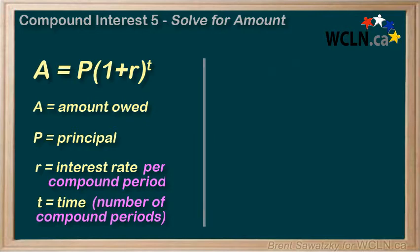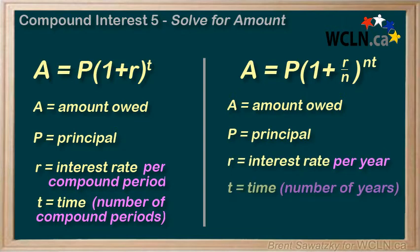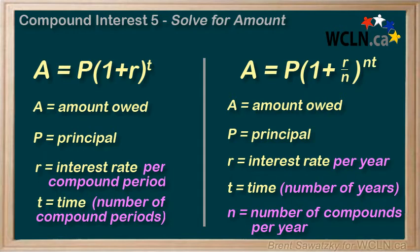Method 2: we sometimes add extra details to the equation to remember them. A equals P times (1 plus r over n) to the power of n times t. Here, A and P are the same as before, but r is the interest rate per year, t equals the time in years, and n is the number of compounds per year. In the end, these two equations do the exact same thing, so you just decide which one you want to use.